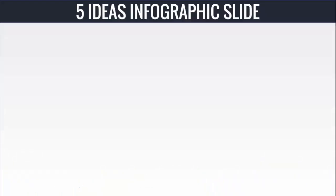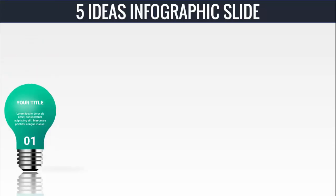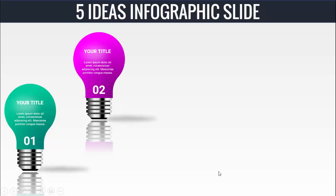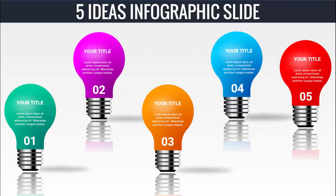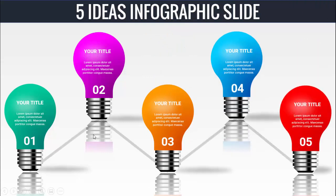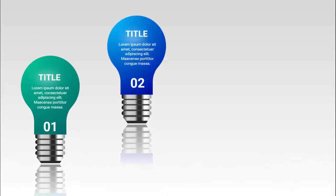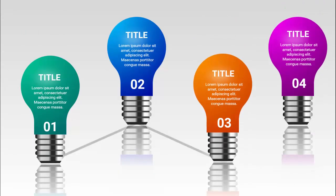In today's tutorial, I'm going to show you how to create a five-ideas infographics slide in PowerPoint. When I click, you can see I've created this bulb completely in PowerPoint, where you can add the option number, the title, and the detailed text. I've created some shadow effect with reflection. When I click, the second bulb will come with a different color combination, then the third, fourth, and fifth, connected with a line. I've created a five-option slide and another slide with only four options — depending on your requirement, you can choose.